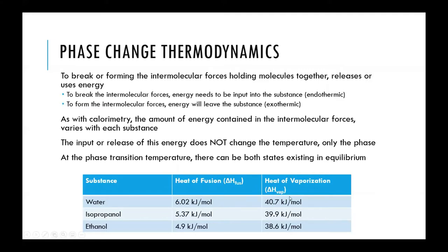As something is changing its phase, there is no change in temperature. At a phase transition temperature — say, 0°C for water — there can be ice, water, or a combination of both depending on how much energy was input. The temperature stays constant at 0°C until all of the substance has gone through the phase change, after which the temperature can continue to rise. A new phase typically also comes with a new heat capacity.